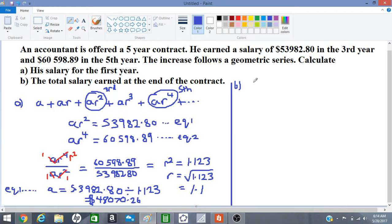The total salary at the end of the contract, so we want to find S5. And we use this formula: sum to the nth term is equal to A times one minus r to the n over one minus r, where r is not equal to one. So we are going to find the sum to the fifth term.